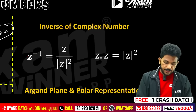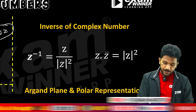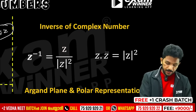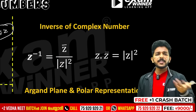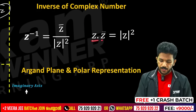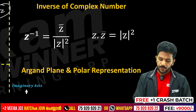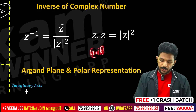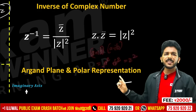Inverse — z inverse is 1 by z. That is the standard form. Z inverse equals z-bar divided by mod z whole square. Note: a plus ib multiplied by a minus ib equals a squared plus b squared, which is mod z squared. You will not be able to solve the complex number without this.